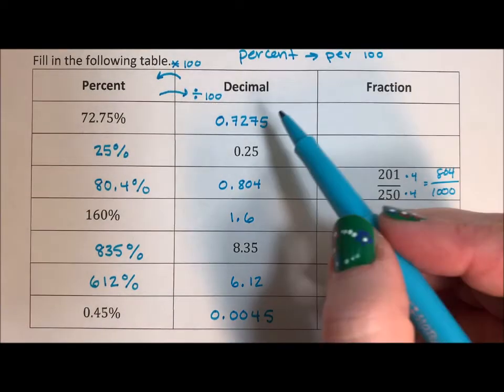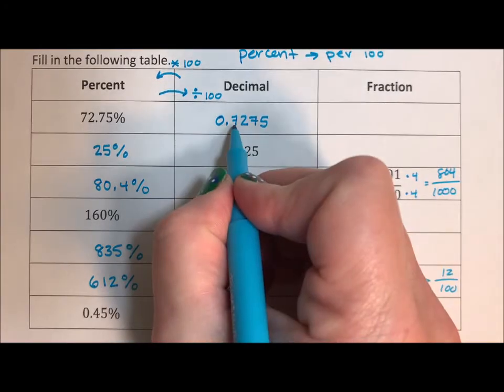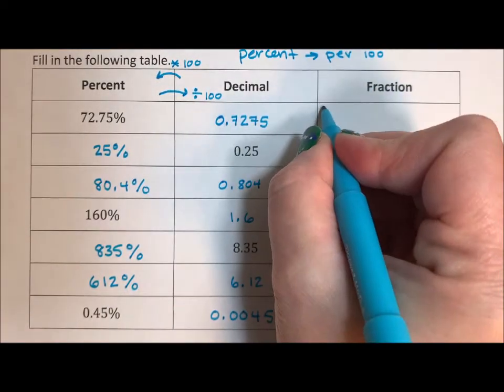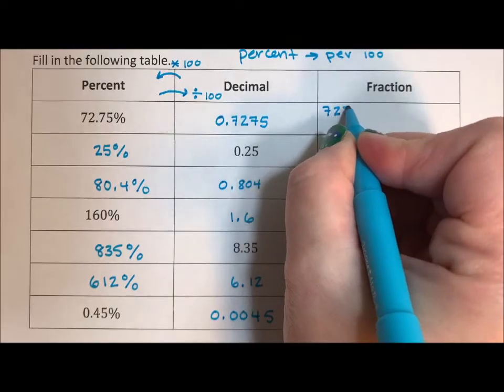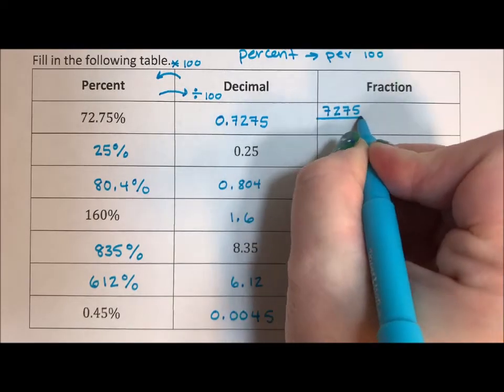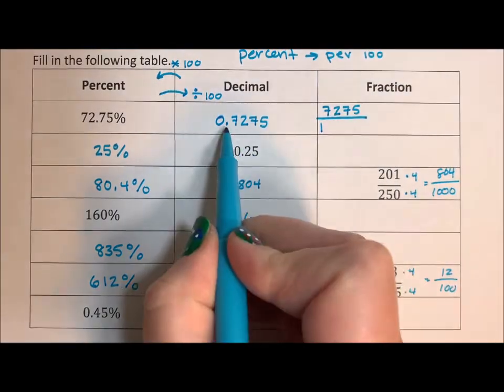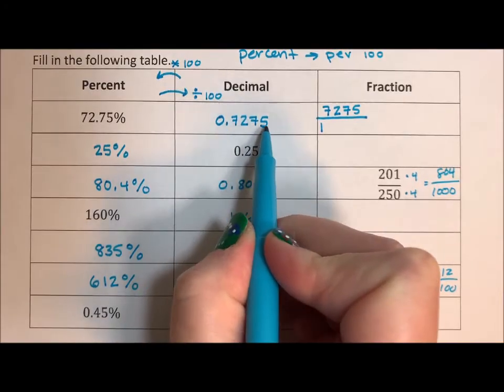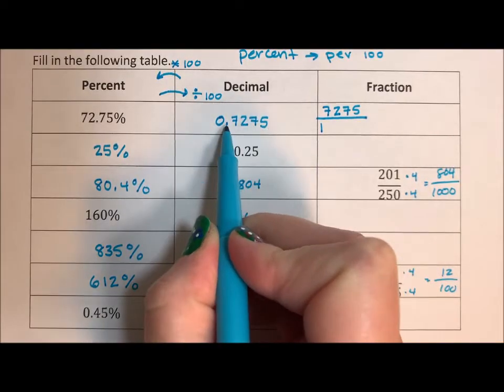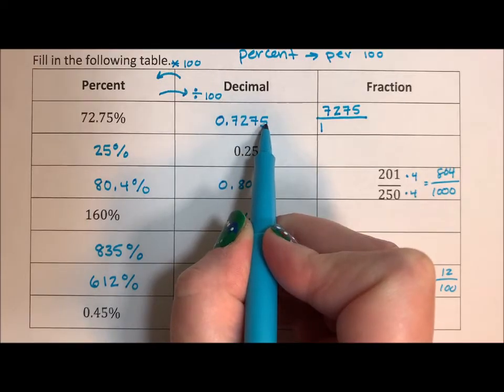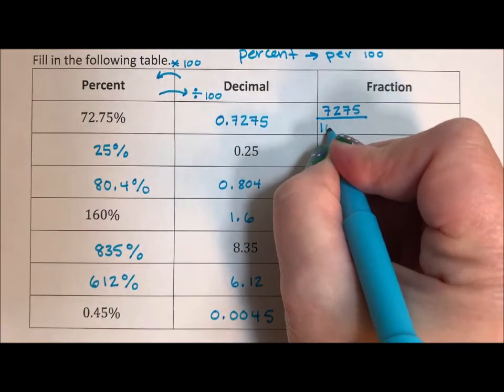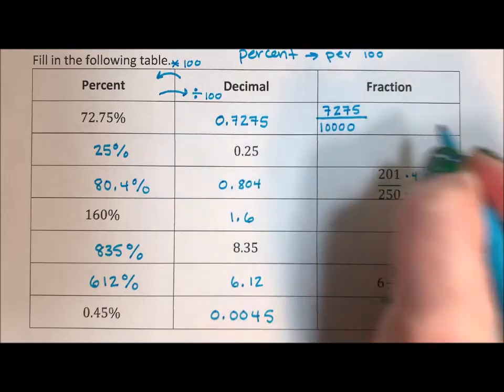Now the decimal. You take the number without the decimal point, 7275. And you put it over a 1 with the number of zeros as there are numbers past that decimal point. So there are 1, 2, 3, 4 numbers past the decimal point. So we do 1, 2, 3, 4 zeros.